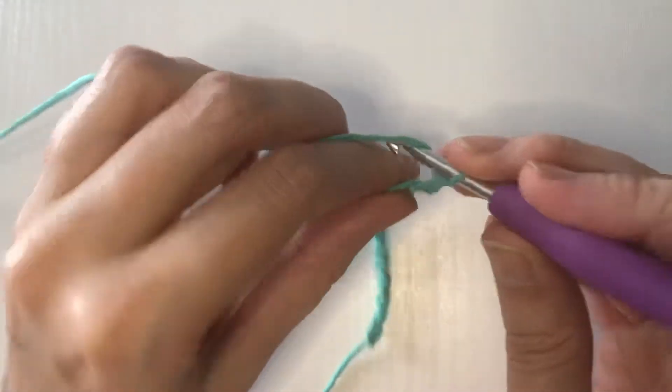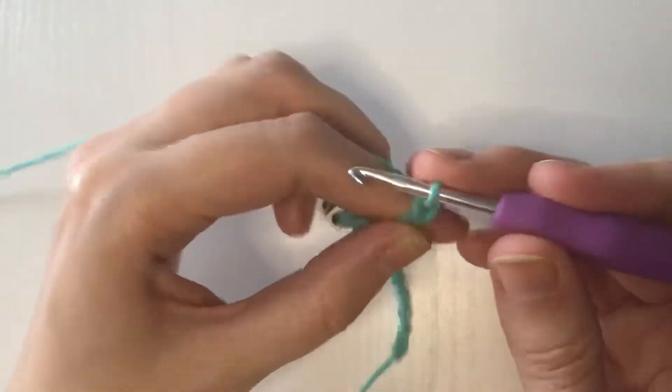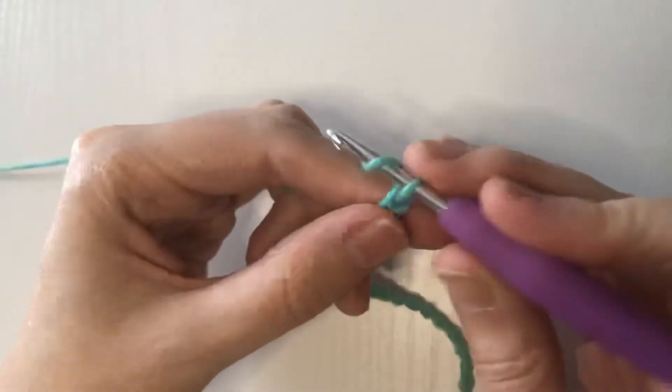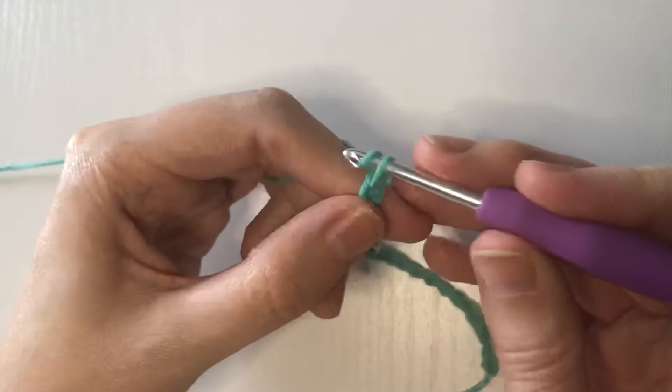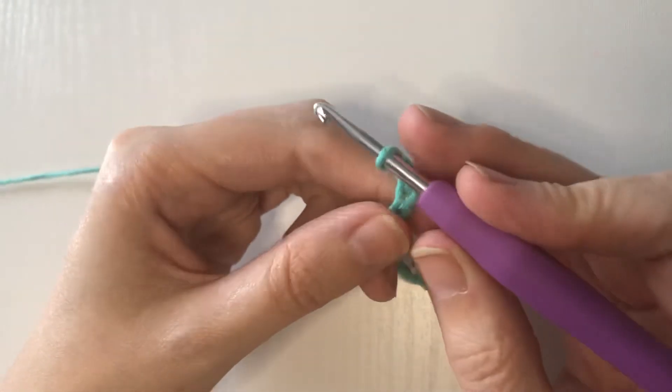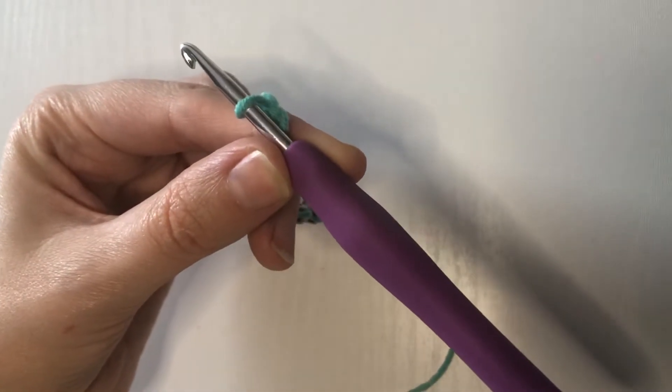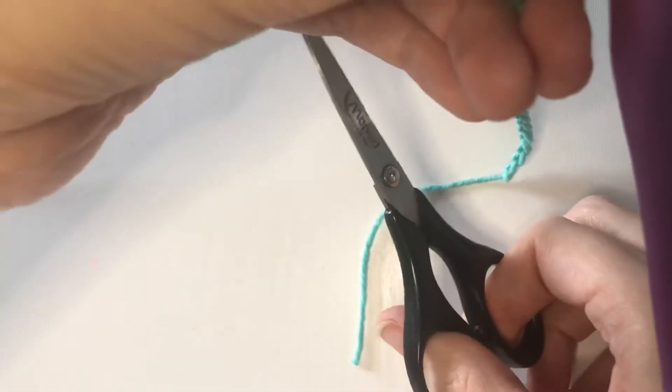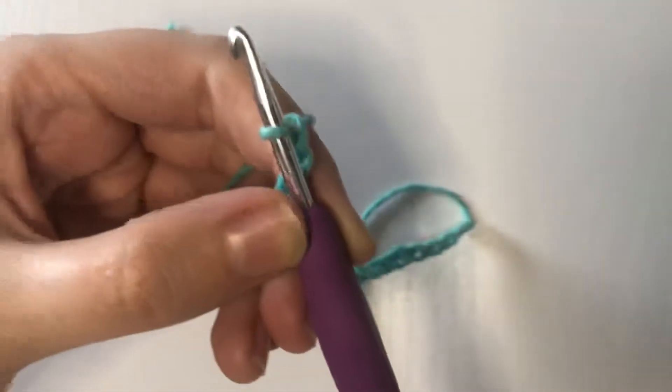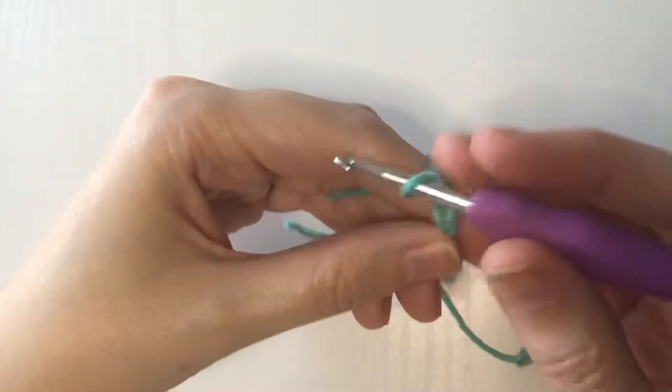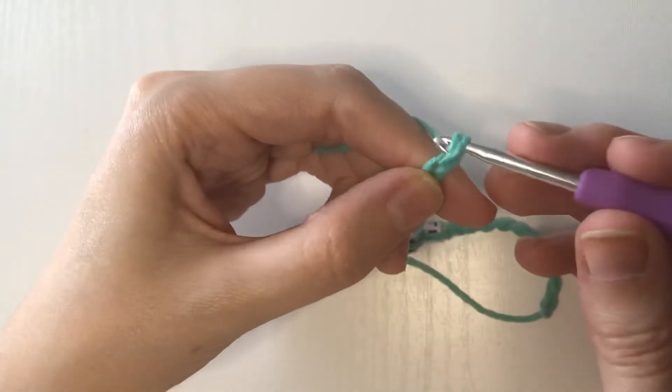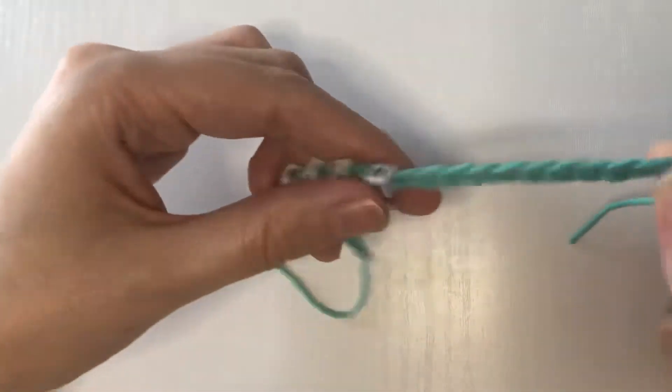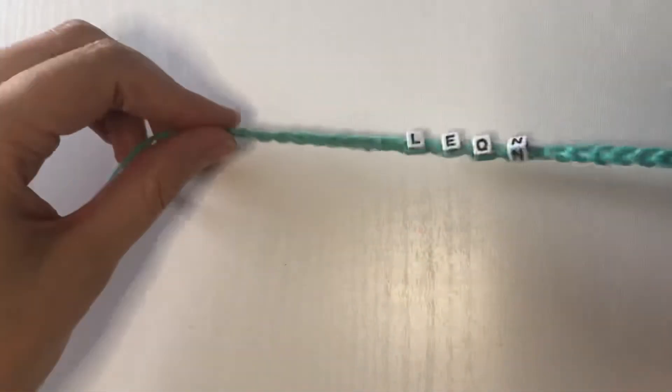Now we take our scissors, we cut the yarn, and we yarn over and pull it through, and we yarn over and pull it through. This is gonna make a knot nice and tight, and there is our bracelet.